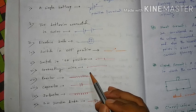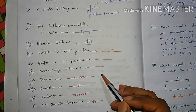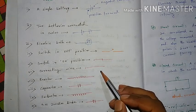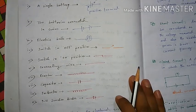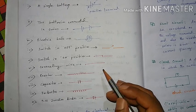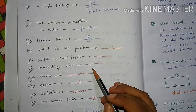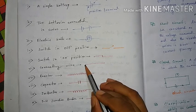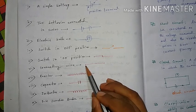Connecting wires are connected to the circuit. They are used to connect components together within the circuit.